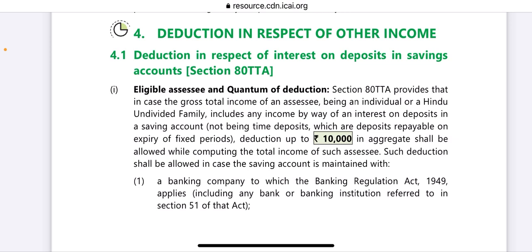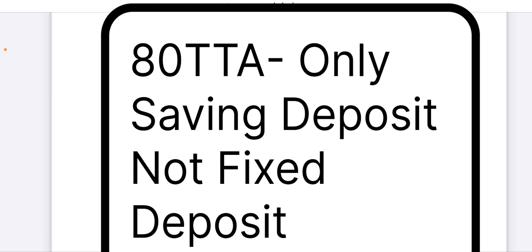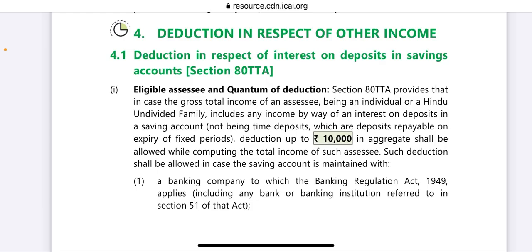Eligible Assessee and Quantum of Deduction: Section 80TTA provides that in case the gross total income of an assessee being an individual or HUF includes any income by way of interest on deposits in a saving account — not being time deposits, i.e., fixed deposits — a deduction up to ₹10,000 in aggregate shall be allowed while computing the total income.